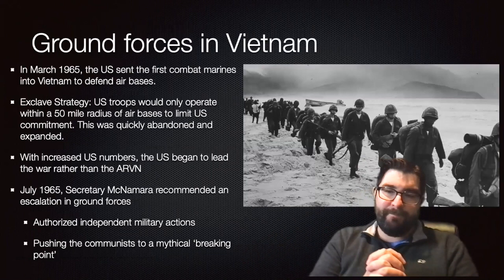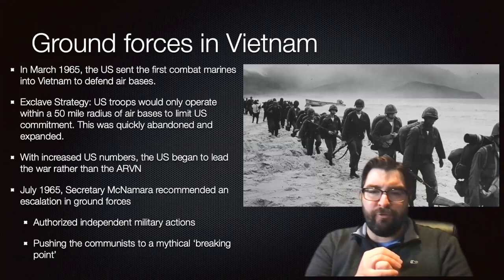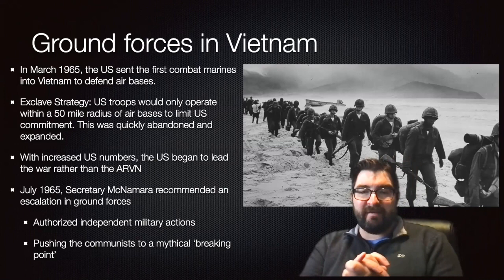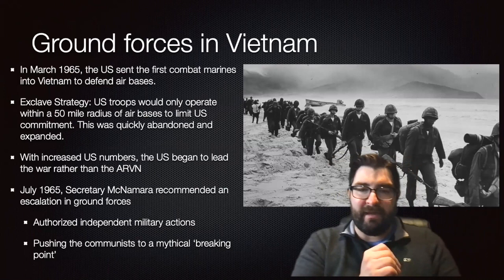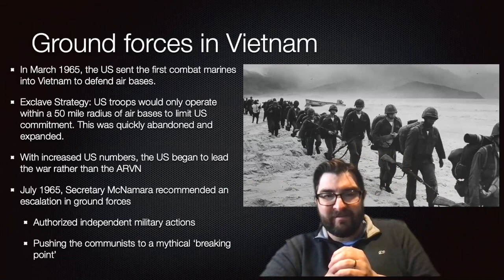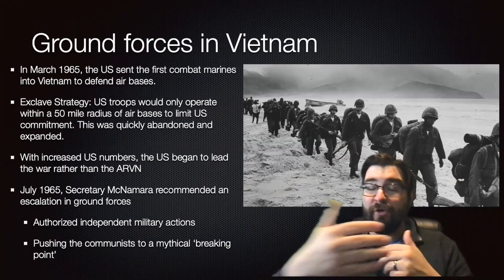Along with the bombing campaigns of Rolling Thunder, the United States injected ground forces into Vietnam beyond just the 16,000 advisors that had existed before the Gulf of Tonkin incident. In March of 1965, the United States sent the first combat Marines into Vietnam to defend air bases. What started as the exclave strategy — where U.S. troops would only go within 50-mile radiuses of the air bases — would quickly be abandoned, and American soldiers began to venture further in-country.